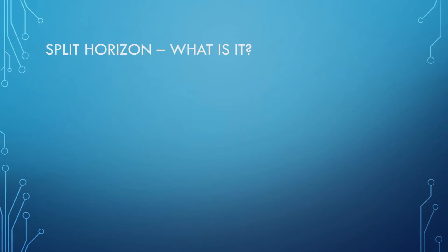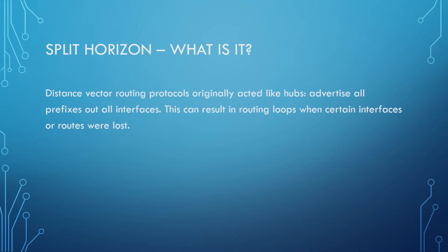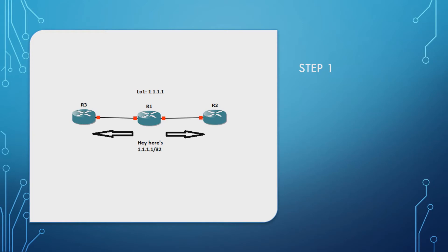So, split horizon — what is it? Distance vector routing protocols originally acted like hubs, advertising all their prefixes out all interfaces. As you can imagine, this could result in routing loops when certain interfaces or routes were lost altogether. Rather than just reading that definition, let's have a look at a visualization.